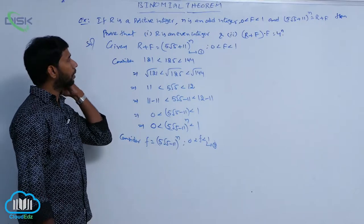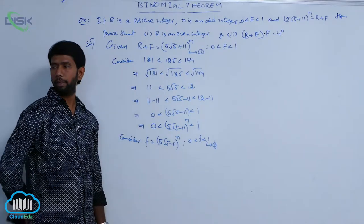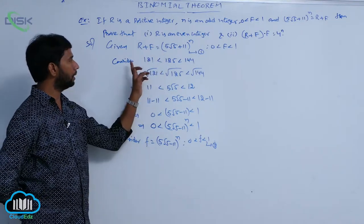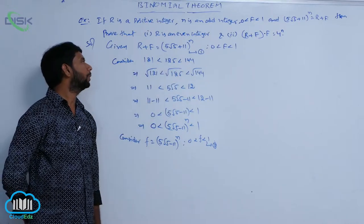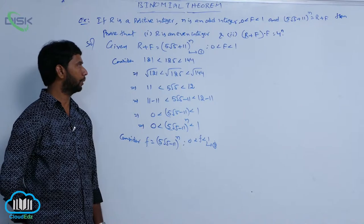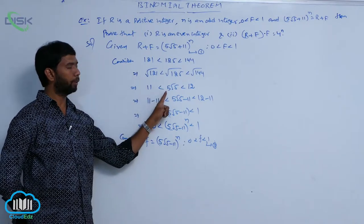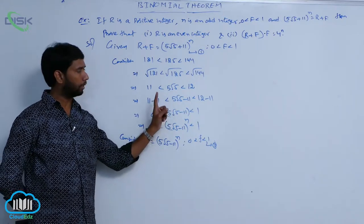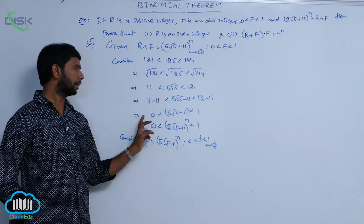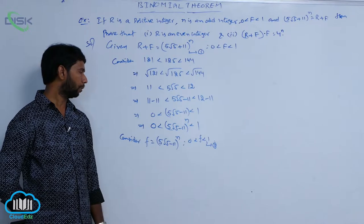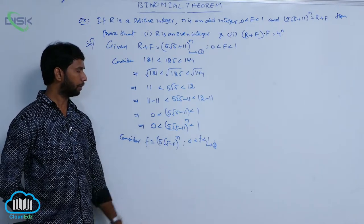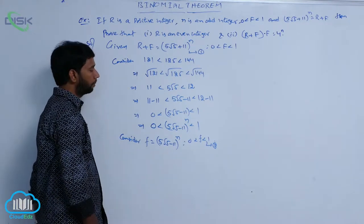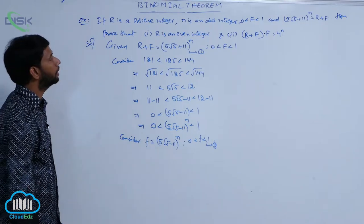The conjugate of (5√5 + 11) is (5√5 − 11). Since 5√5 = √125 lies between 11² = 121 and 12² = 144, we have 11 < 5√5 < 12. Subtracting 11: 0 < 5√5 − 11 < 1. Taking nth power on both sides: 0 < (5√5 − 11)^n < 1. So small f = (5√5 − 11)^n, condition number 2.